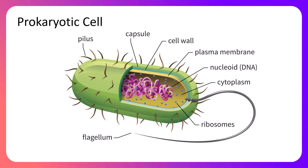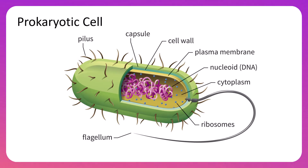To round out the external structures, there is a flagella — a tail the cell uses to move. Not all prokaryotic cells have the pilus and flagellum; those are optional. It's much easier to move through your environment with a flagella. So the basic prokaryotic cell has a cell membrane, cell wall, nucleoid region, ribosomes, and cytoplasm.